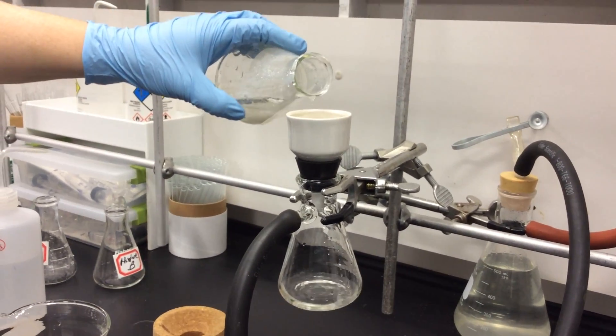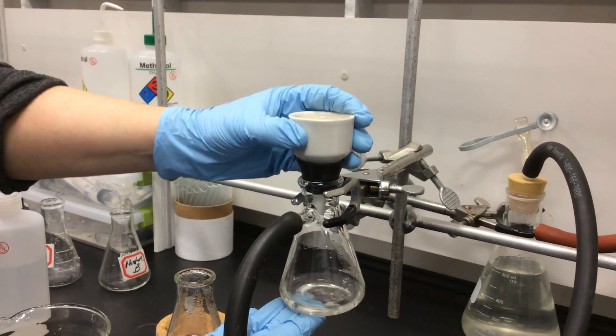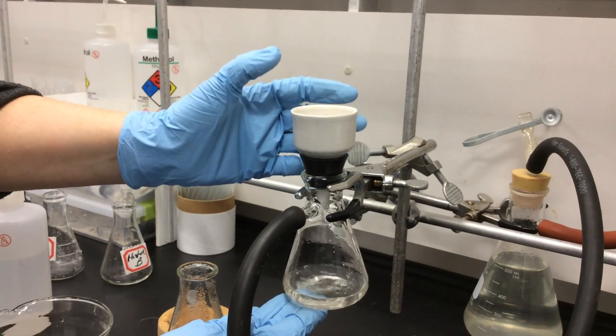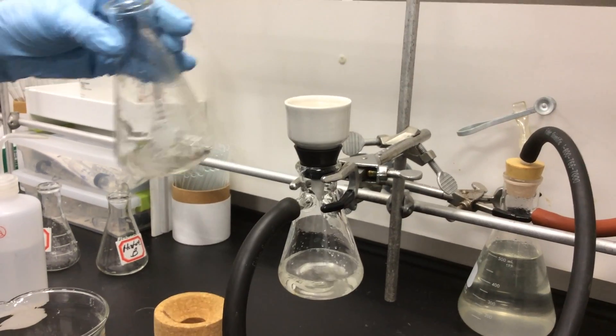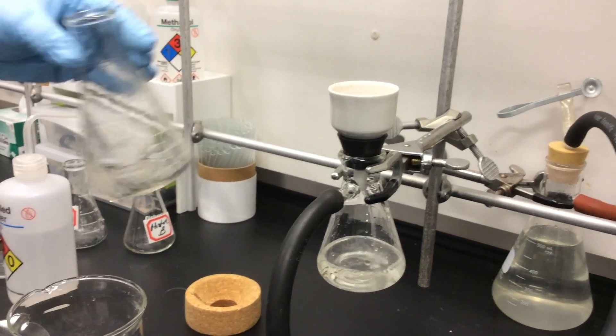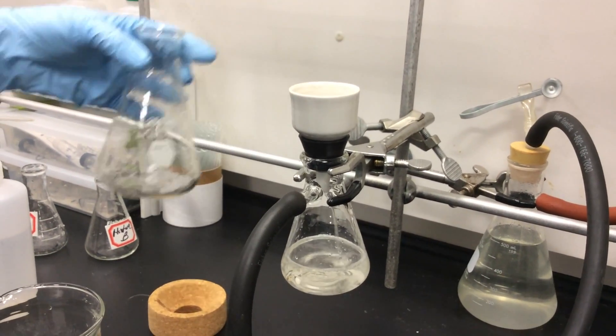Now as we're filtering, the purified crystals are being captured in the Buchner funnel, and the liquid with the impurities are going to the bottom of the filter flask. We swirl and dump, as I like to call it. We swirl the flask to get all the crystals in solution, and then we just dump it into the Buchner funnel.